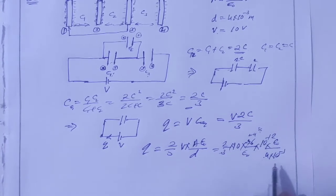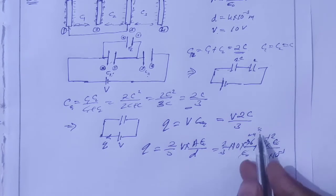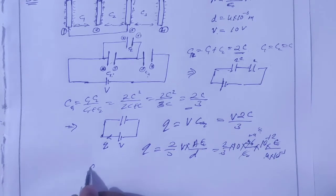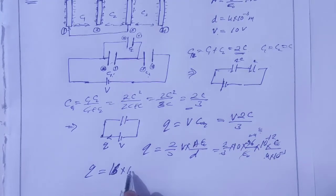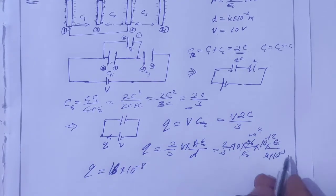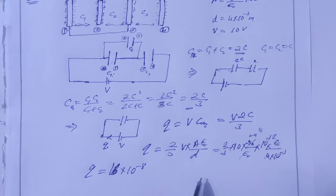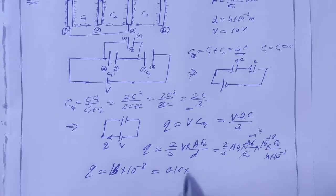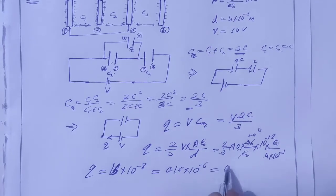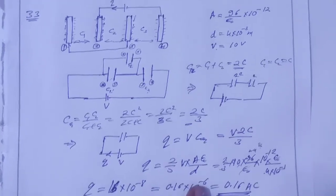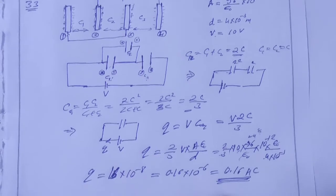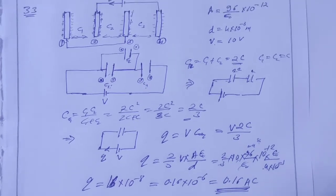So here the result comes: Q is equal to 16 into 10 to the power minus 8, which can also be written as 0.16 into 10 to the power minus 6, that is 0.16 micro coulombs. So the charge supplied by the battery to each plate is 0.16 micro coulombs.